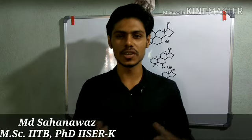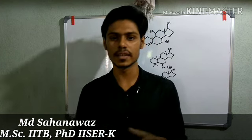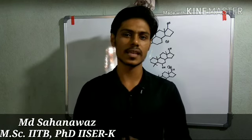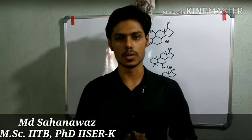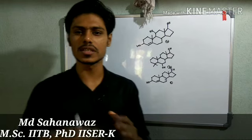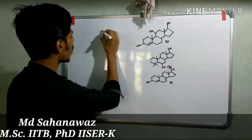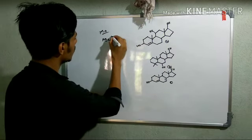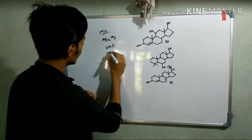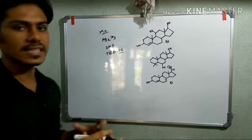Welcome friends, you are watching Chemistry Lover. We were discussing oxidizing agents and reagent chemistry. In the previous video, I discussed the oxidation of alcohols with chromium reagents, and the remaining part I will discuss in this video. Today I will be talking about several other oxidizing agents except chromium reagents — namely, manganese reagents, silver carbonate, Dess-Martin periodinane, and TEMPO.